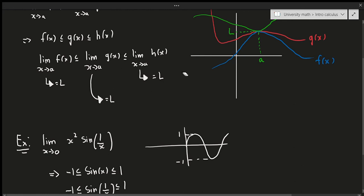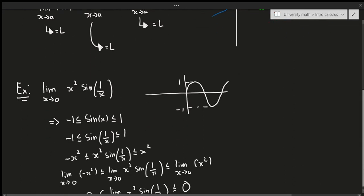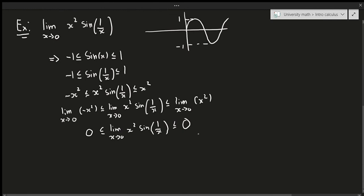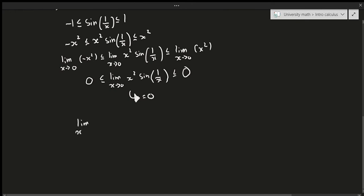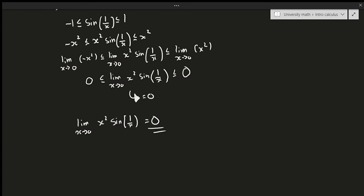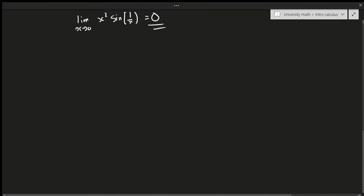Since the left limit equals 0 and the right limit equals 0, the Squeeze Theorem tells us the middle limit must also equal 0. So lim(x→0) of x²·sin(1/x) = 0. You can usually tell to use the Squeeze Theorem when the limit involves a trig function — sine, cosine, or occasionally arctangent — multiplied by something that goes to zero.